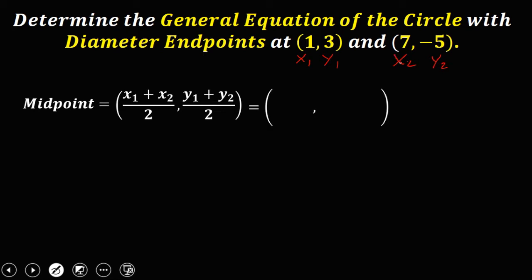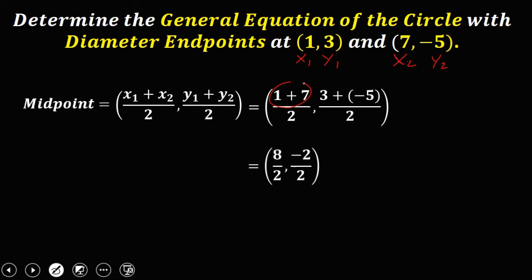For x: 1 plus 7 over 2. For y: 3 plus negative 5 over 2. So 1 plus 7 is 8, and 3 minus 5 is negative 2. Then 8 divided by 2 is 4, and negative 2 divided by 2 is negative 1. So (4, -1) is the midpoint, or the center of the circle.